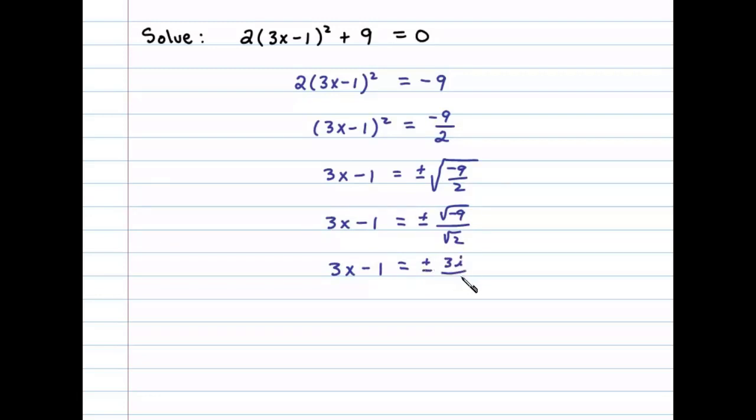This can be rationalized if I multiply numerator and denominator by √2. That leaves us with 3x - 1 = ±(3i√2)/√4, which is 2.